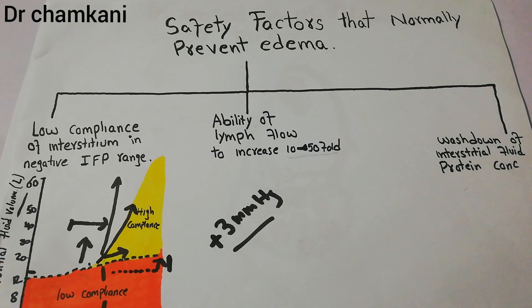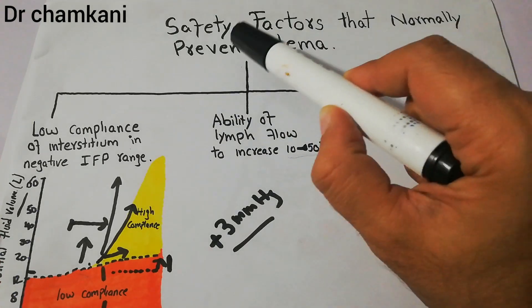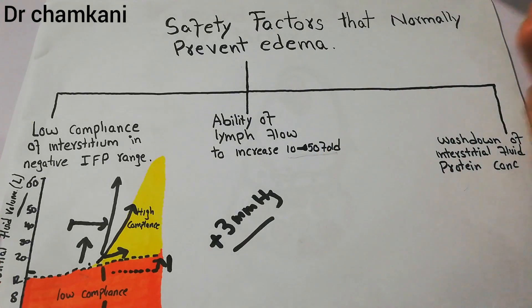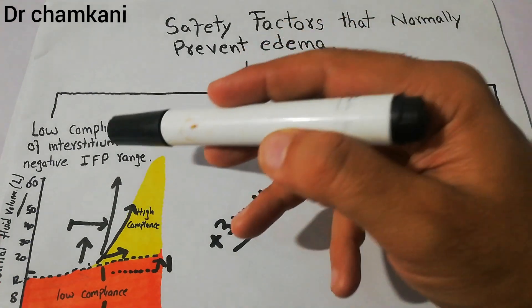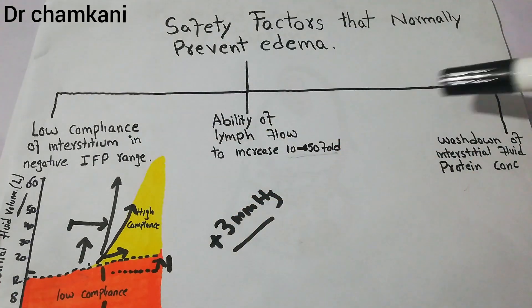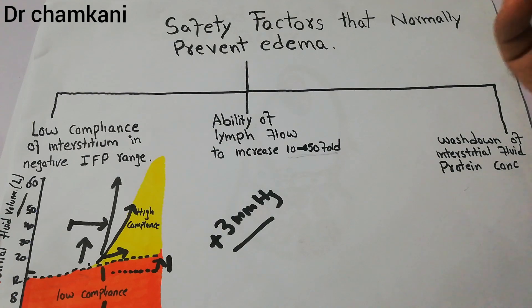In this lecture we will talk about the summary of safety factors that normally prevent edema. In the previous 2 to 3 lectures we have discussed in detail the 3 main safety factors that prevent edema. In this lecture we will summarize their effects.